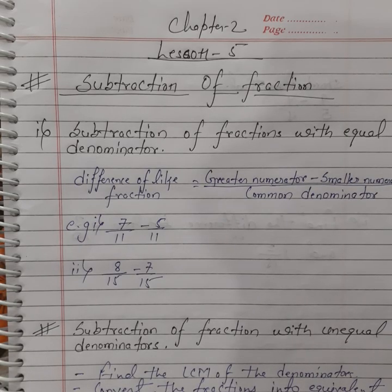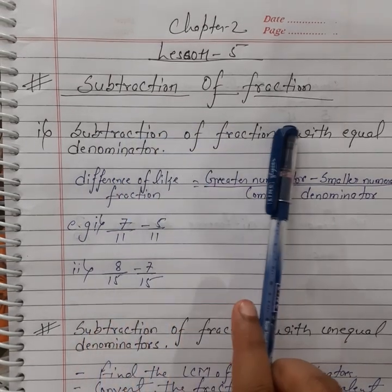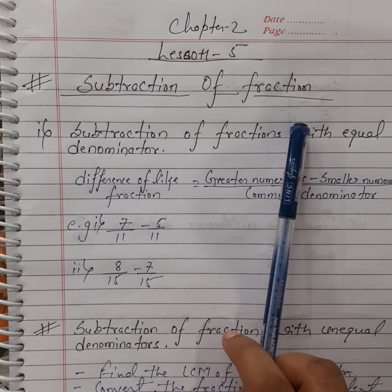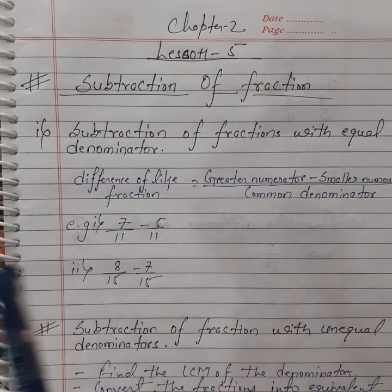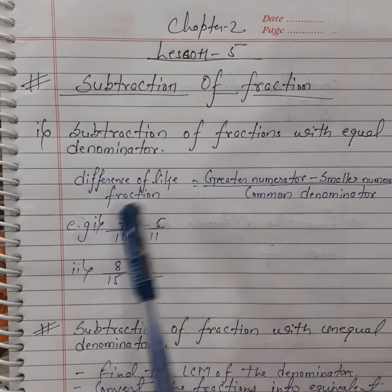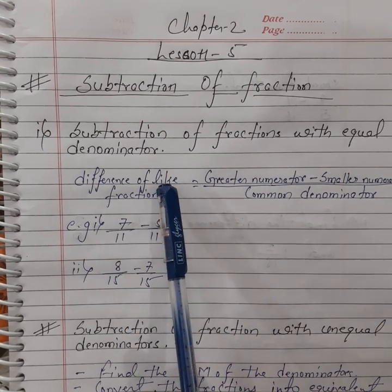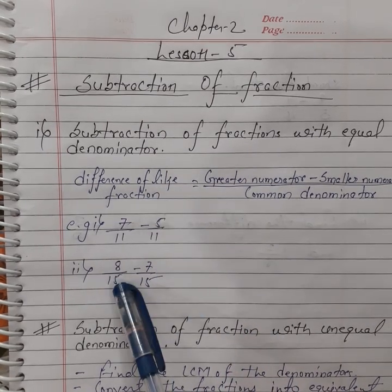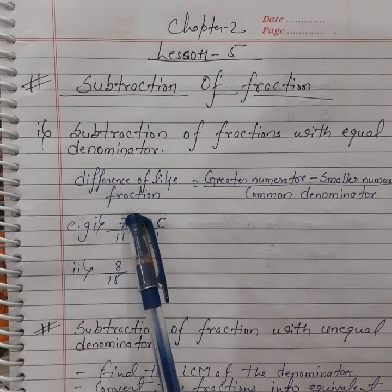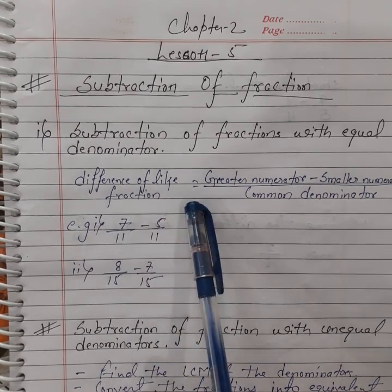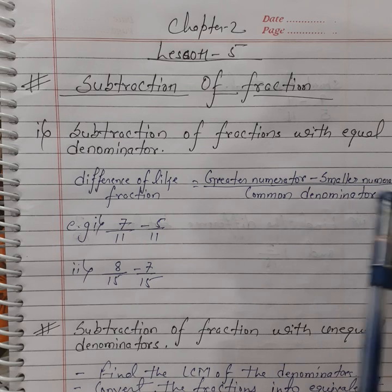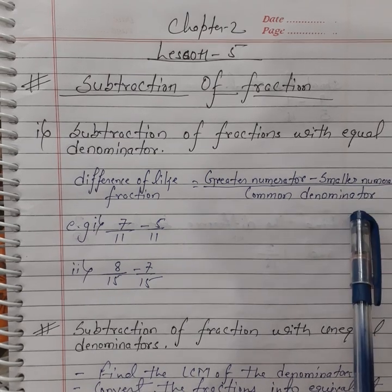Today we are going to learn about subtraction of fractions — that is, how we subtract fractions. First, subtraction of fractions with equal denominators, which means like fractions. The difference of like fractions is equal to the greater numerator minus the smaller numerator, divided by the common denominator.